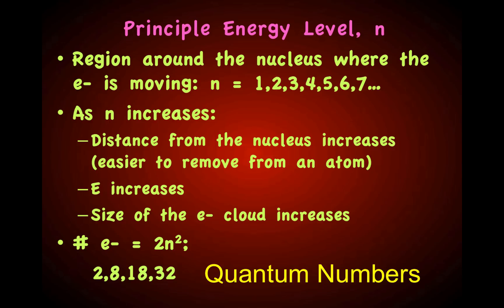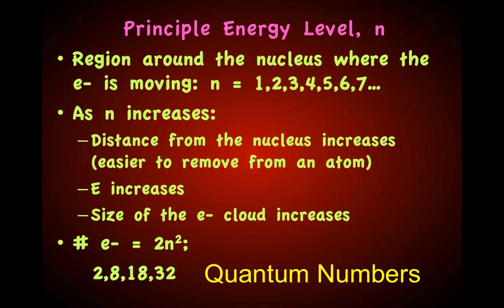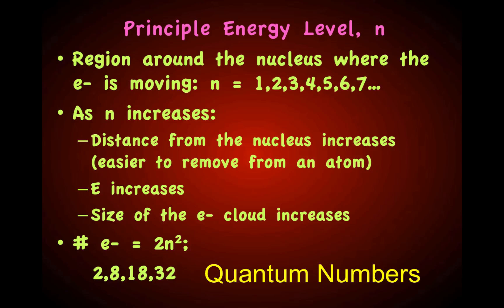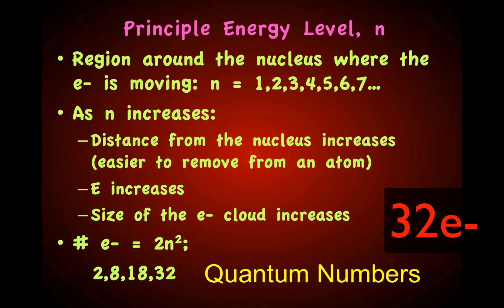To find the number of electrons that can exist in a principal energy level, we use the formula 2n². That means in the first energy level we can have 2 electrons, in the second energy level 8 electrons, in the third energy level 18 electrons, and in the fourth energy level 32 electrons.